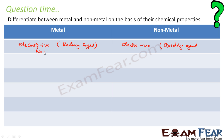For example, if you take sodium, it will easily give one electron to become Na+. If you see chlorine, it will easily take one electron — chlorine + electron → Cl⁻. So they are electronegative. Electropositive means when they are positive, they are more stable. Electronegative means when they are having a negative charge, they are more stable.